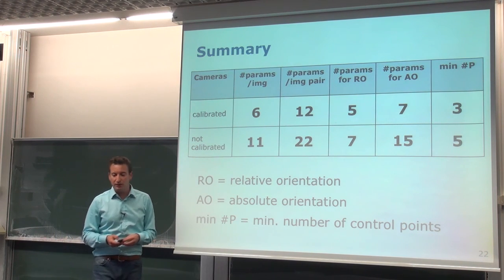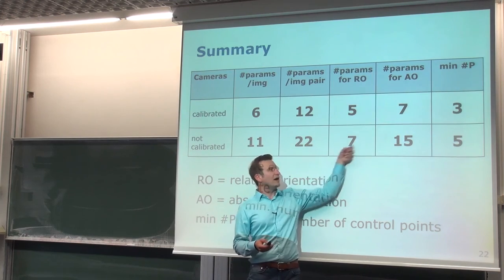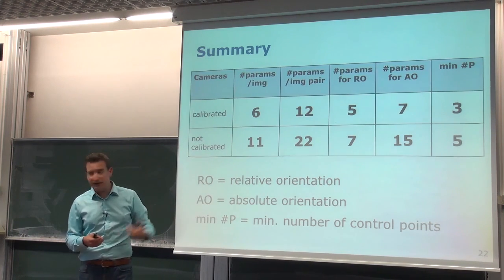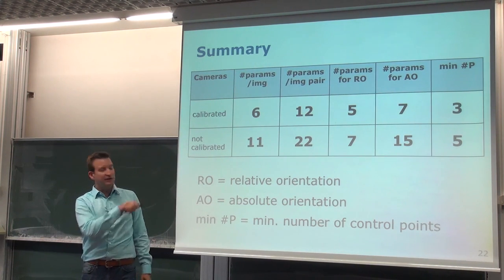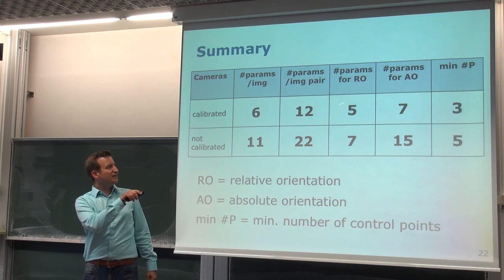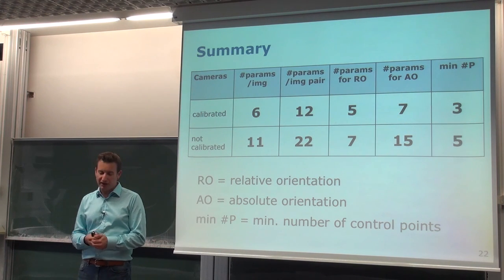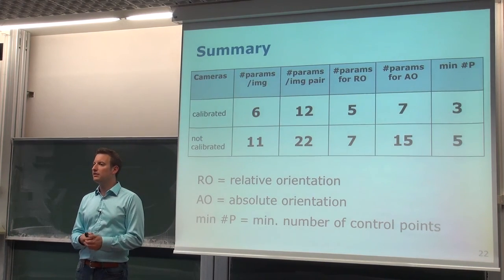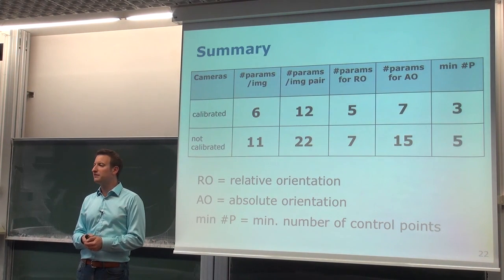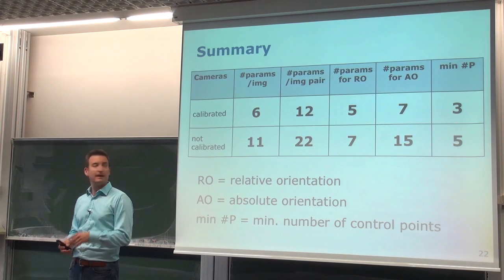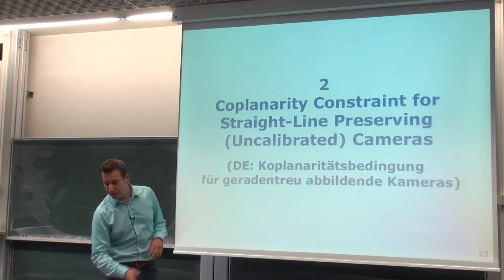What we continue with is finding a way to describe the relative orientation, which will lead us to the fundamental matrix for the uncalibrated case and later to the essential matrix for the calibrated case. We'll also see how to estimate the fundamental matrix from corresponding points. That's the timeline for the second hour and the next two to three weeks. We'll take a five-minute break now and then continue with the next block.